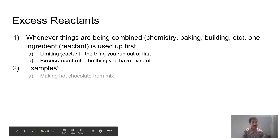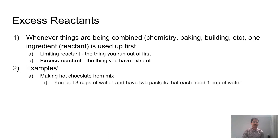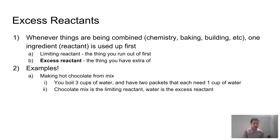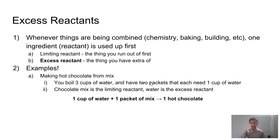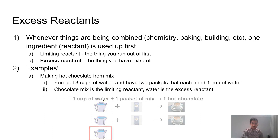Let's talk about some examples. If you were making hot chocolate from mix packets, and you boil up three cups of water but only have two packets, and each packet needs one cup of water — well, the chocolate mix is going to be limiting. When you use up those two packets, you'll still have some hot water sitting around. So with three cups of water and two packets, we can only make two cups of hot chocolate. The excess reactant is the water, and we'll have one cup of water left behind.